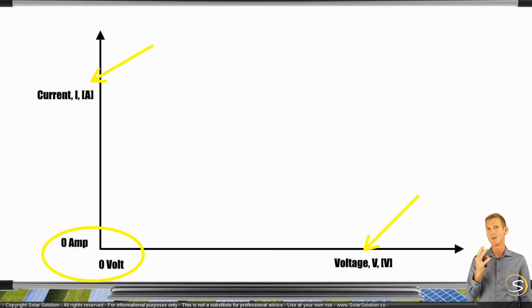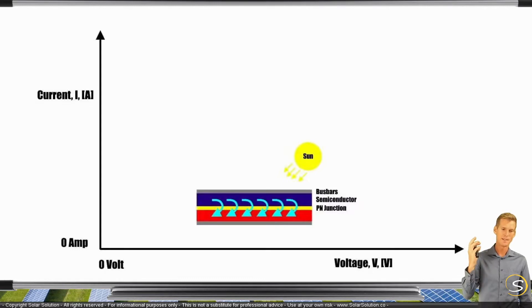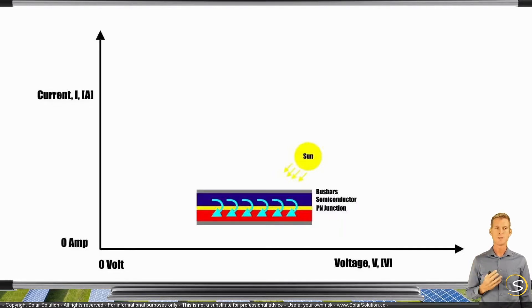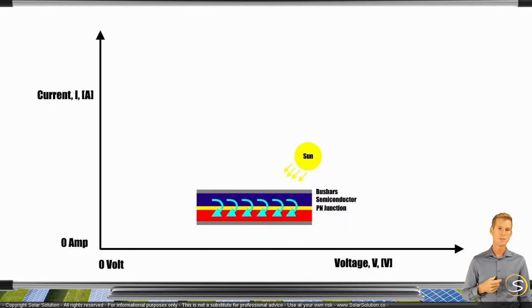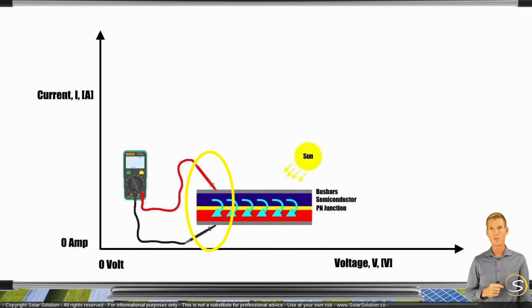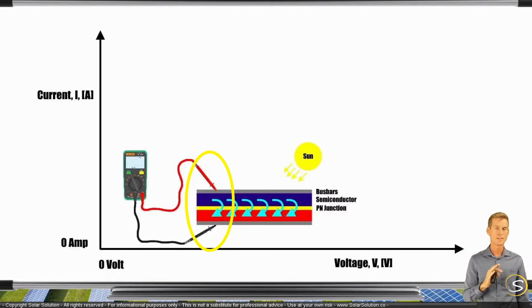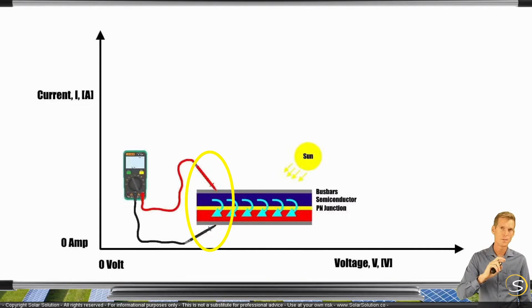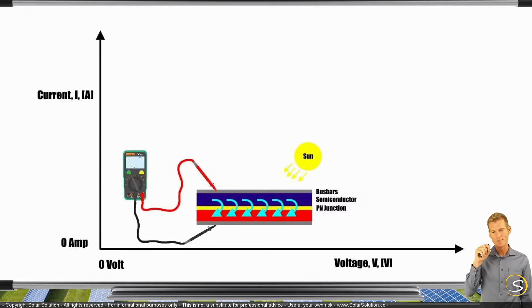A solar cell is a semiconductor, and when the sun hits it, it starts to produce electricity and electrons jump from one side to the other. Now let's assume a solar cell that is not hooked up to any system — not connected in an electrical circuit — but the sun is shining on it. We take a digital multimeter and measure what voltage we get between the two terminals, the positive and negative output. By measuring the voltage over the cell, we have not created an electrical circuit; we are just measuring the electrical potential. No current is running, but we are measuring a certain voltage — and this is the highest voltage you will ever get from the cell under these conditions.